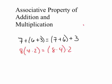The associative property of addition and multiplication states that groupings do not matter. Next is a little bit of a combination.